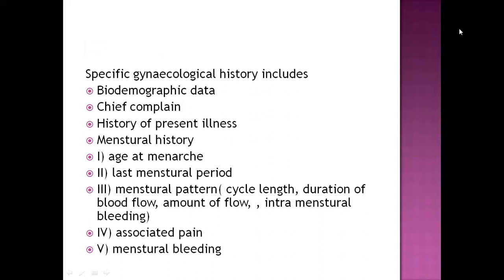A specific gynecological history includes bio-demographic data, chief complaint, and history of present illness. Menstrual history includes age at menarche — menarche being the first menstrual period — last menstrual period, menstrual pattern including cycle length, flow, associated pain if any regularly occurring with menstruation, and menstrual bleeding.